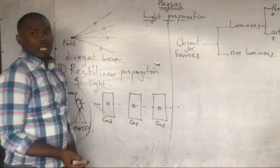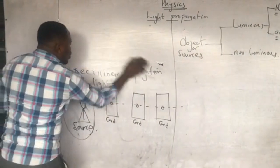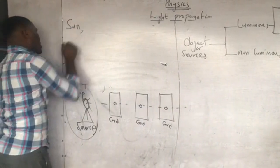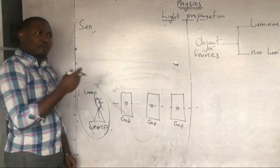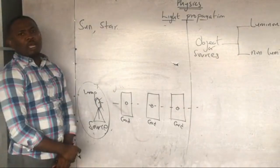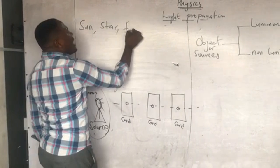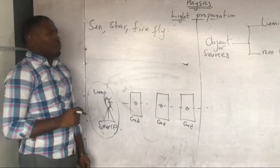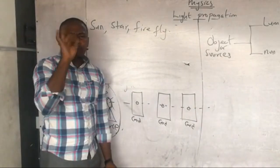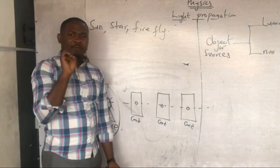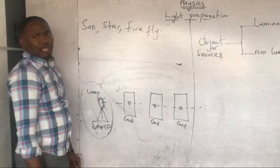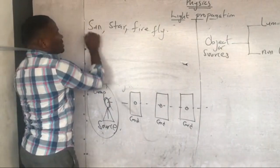An example of a natural luminous source of light is the sun. Another natural luminous source of light is the star. Another natural luminous source is what we call the firefly — in some areas they call it 'mune mune.' The firefly is an insect that flies at night and produces light at intervals. These are all natural sources of light.